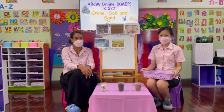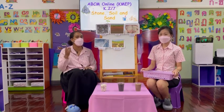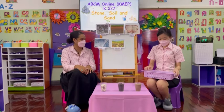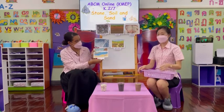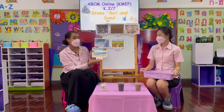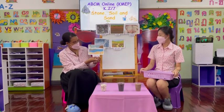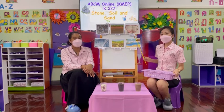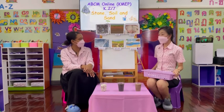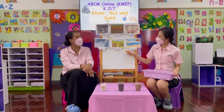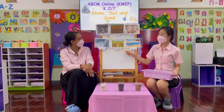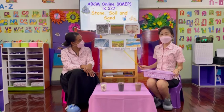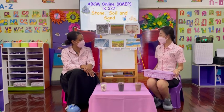Next we have our sand. Can you think of somewhere where we might find sand? Here we have a beach! We can find lots and lots of sand near the sea. So we have: stone in the quarry, soil in the garden, and sand on the beach.